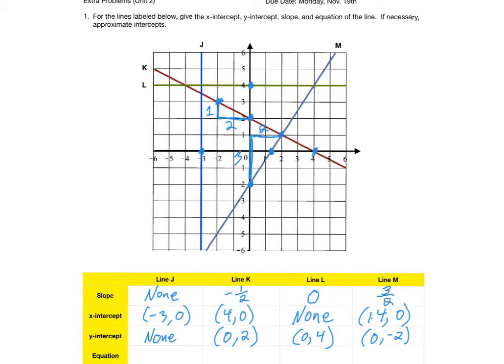Our final task now is to write the equation of the line. Line K, line L, and line M are all non-vertical, so they all have equations of the form Y equals MX plus B. We'll have to deal with line J differently. Let's go ahead and do lines K, L, and M. Line K, we've seen, has a slope of negative 1 half.